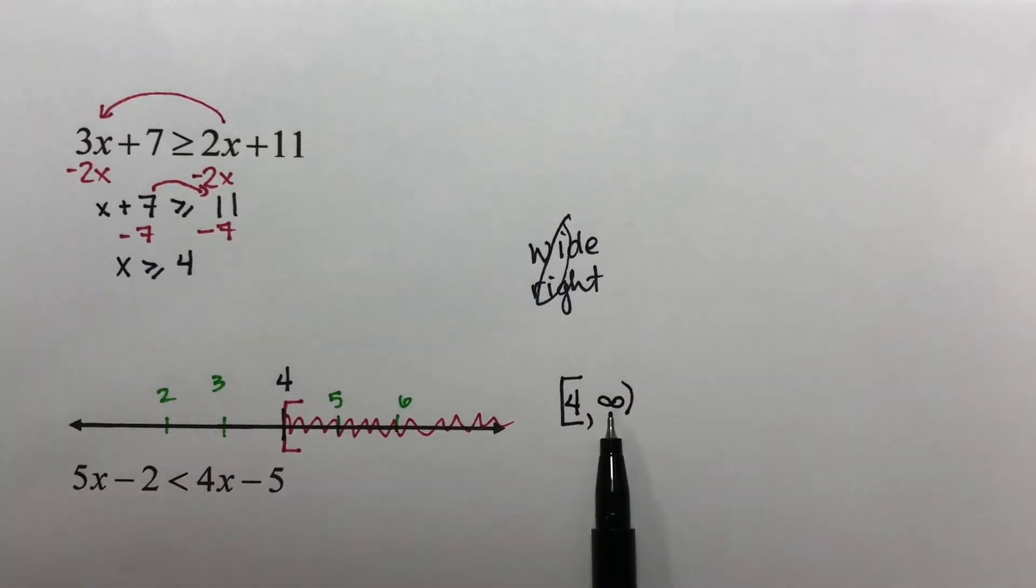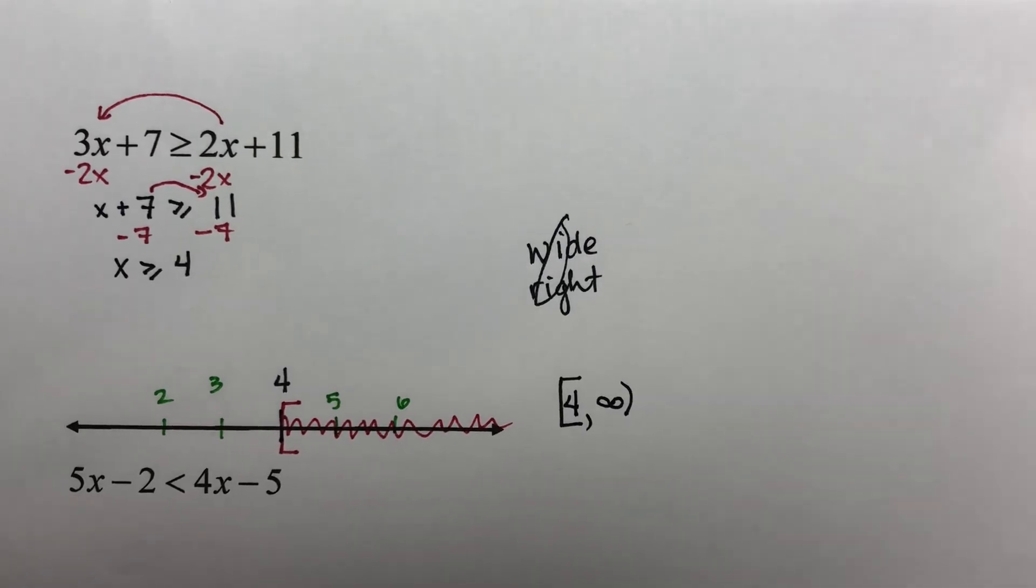Remember, MyMathLab is going to have you enter this part first and then pick the correct graph. On paper, you just do them in the opposite direction, and you will be fine. You're just going to enter your answers in the opposite order.